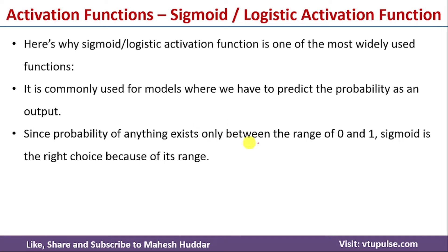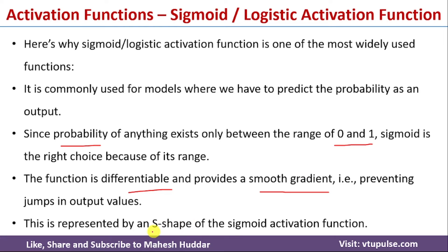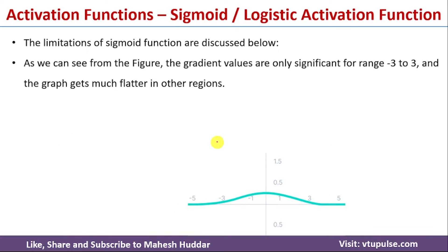The output of the sigmoid activation function is in the range of 0 to 1, and probability values are also in the range of 0 to 1, so it is more suitable for these kinds of problems. The sigmoid function is differentiable and provides a smooth gradient, so we don't get any jumps in the output values, and we can also use it in the backpropagation algorithm. The sigmoid activation function has an S-shape.